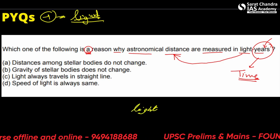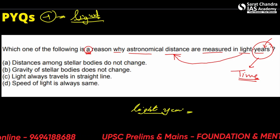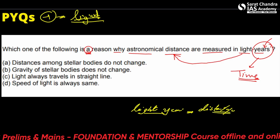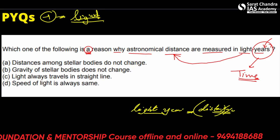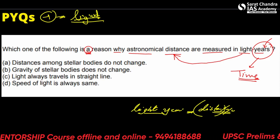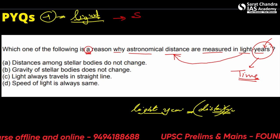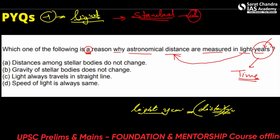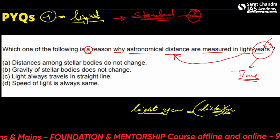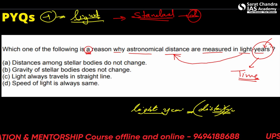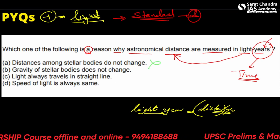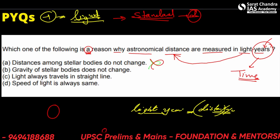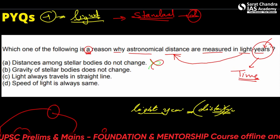A light year is the distance traveled by light in one year — so it is essentially a measure of distance. The first option, 'distances among stellar bodies do not change,' is untrue because the distance between Earth and the Moon or Earth and the Sun does change as orbits are elliptical. The second option, 'gravity of stellar bodies does not change,' is also incorrect because gravity depends on mass and distance using the formula FG = G × M1 × M2 / R².